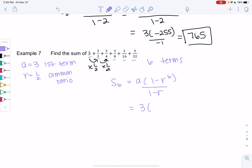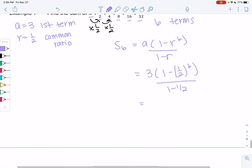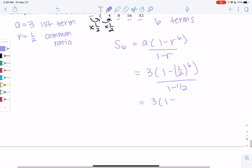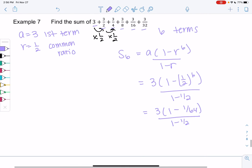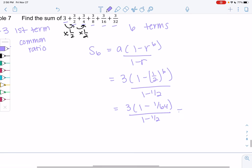a is 3 and we get 1 minus 1 half to the sixth power over 1 minus 1 half. What's 1 half to the sixth? That would be 1 over 64 over 1 minus 1 half. We get 3 times 63 over 64 because 1 minus would just be 63 left over, over 1 half.